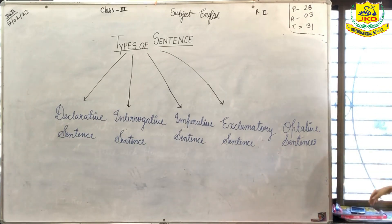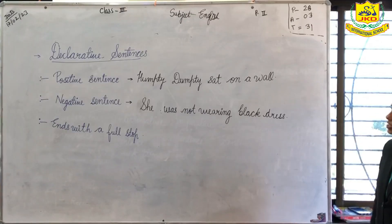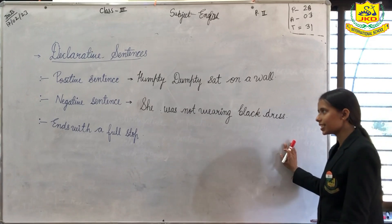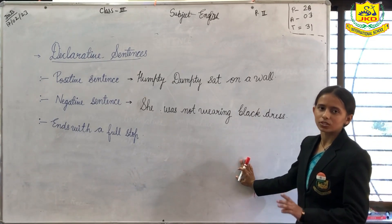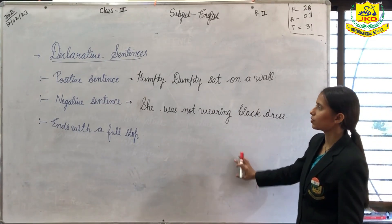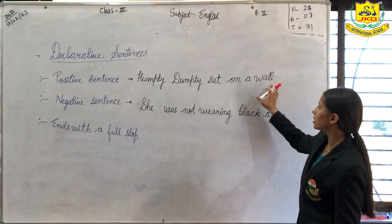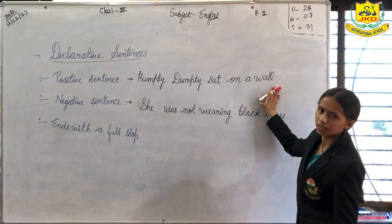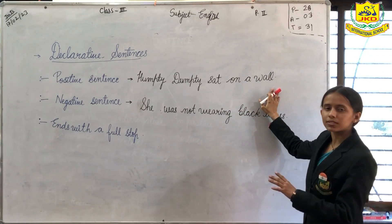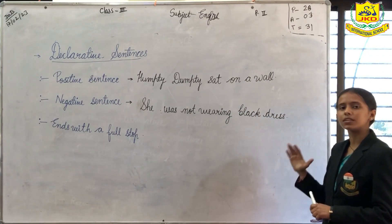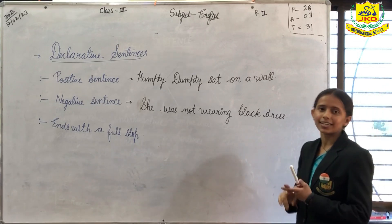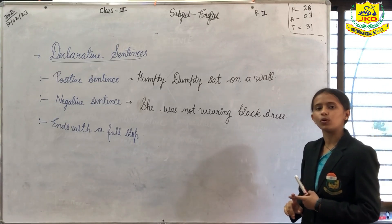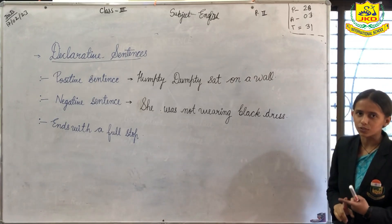First we are going to discuss about declarative sentences. Declarative sentences are basically simple positive sentences. For example, Humpty Dumpty sat in a corner. It is a normal sentence. All the normal sentences come under declarative sentence, and declarative sentence always ends with a full stop.